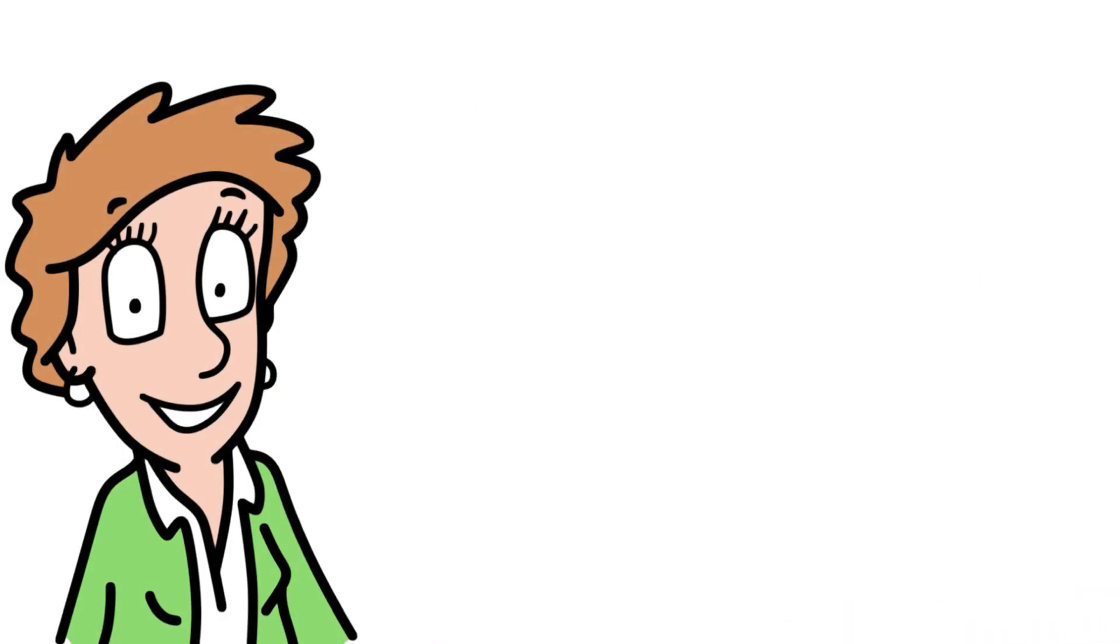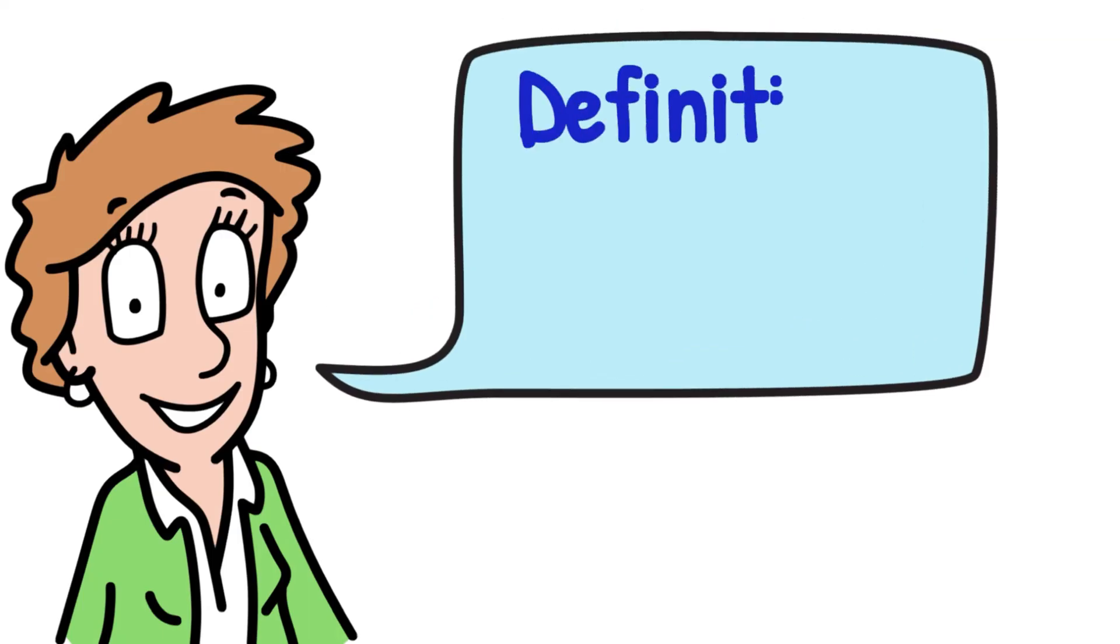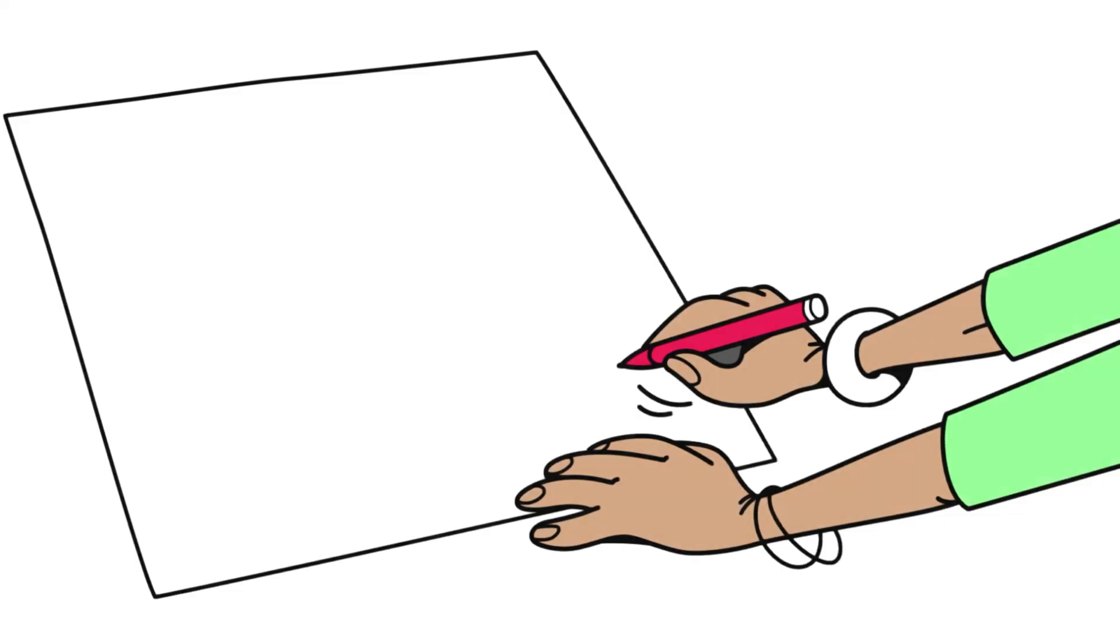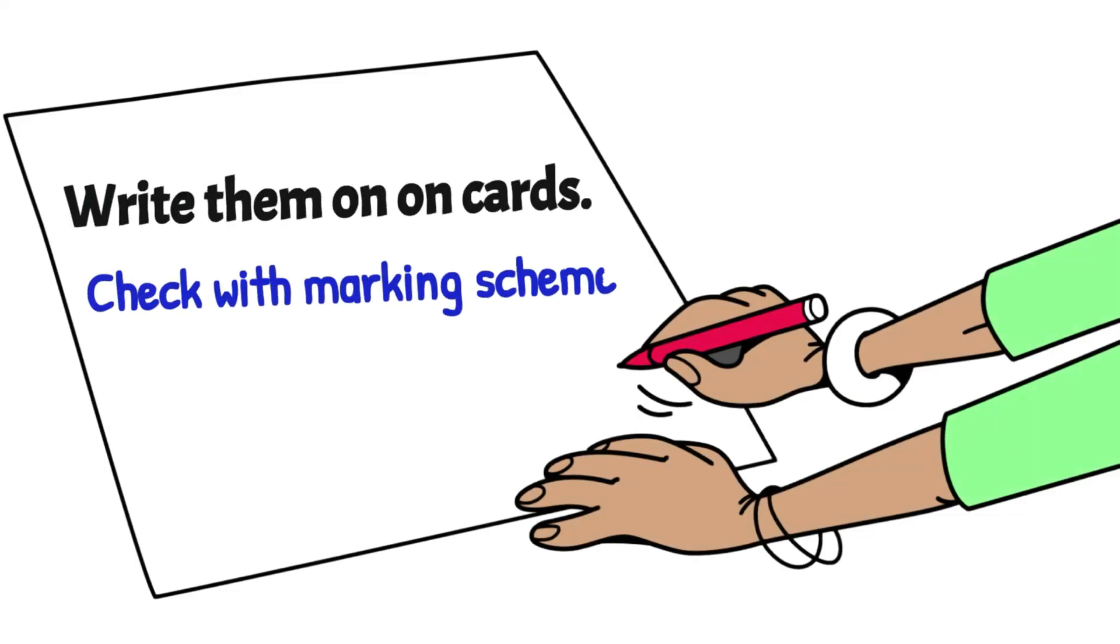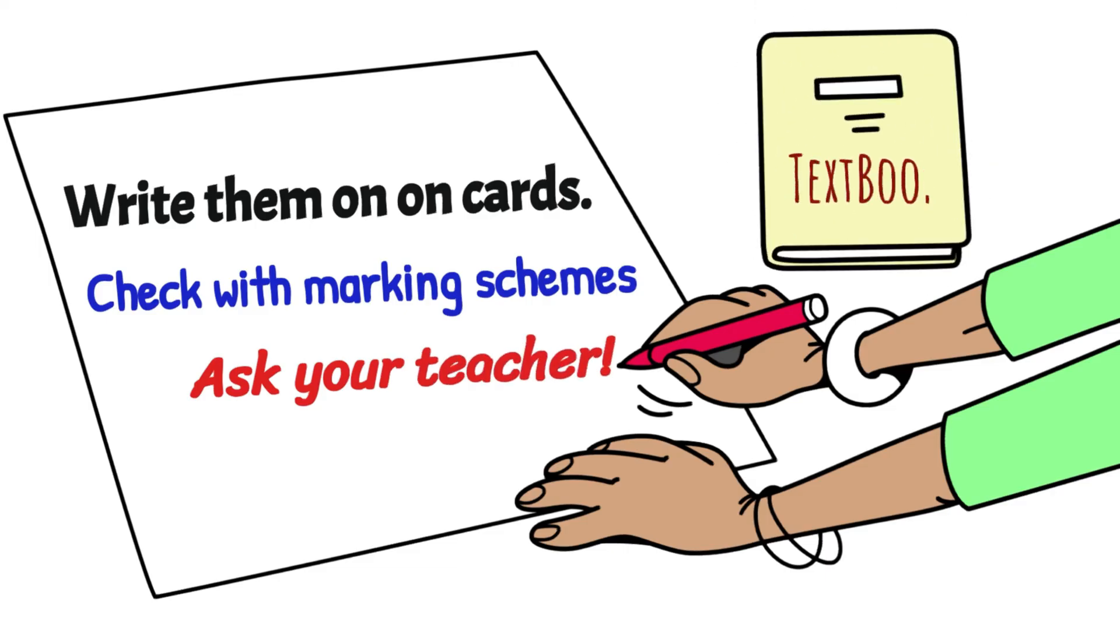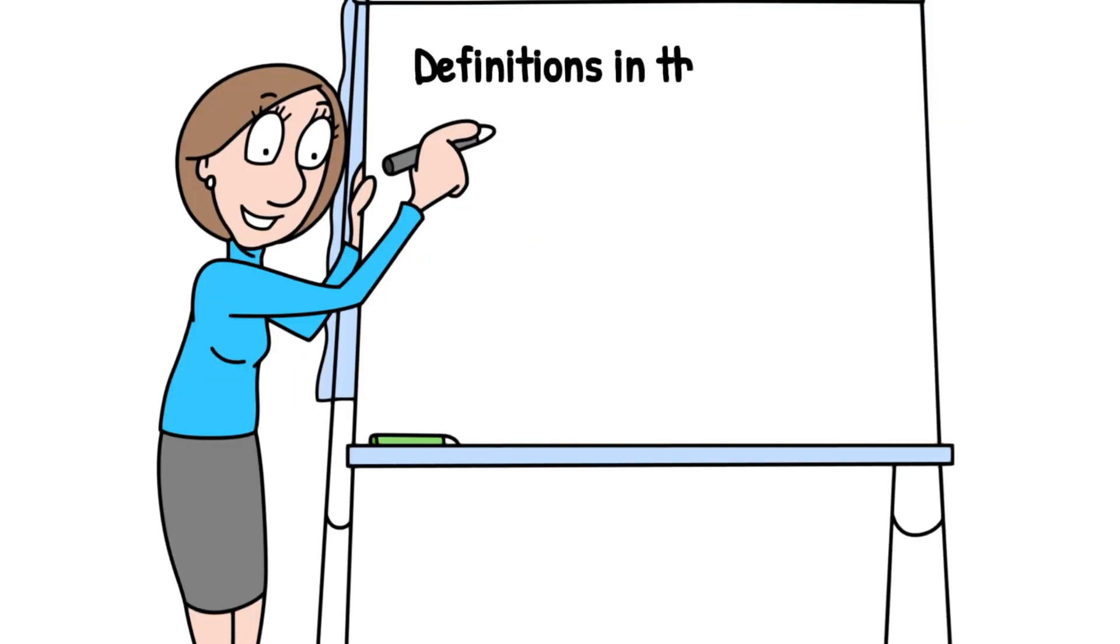As you go through each of the five sections, you'll notice that you will encounter many definitions, and the definitions in genetics are particularly important. They just have to be learned. There's no way around it. One way to learn them is to write the definitions out on cards and frequently go through them. Check with the latest marking schemes because some definitions might have changed slightly.